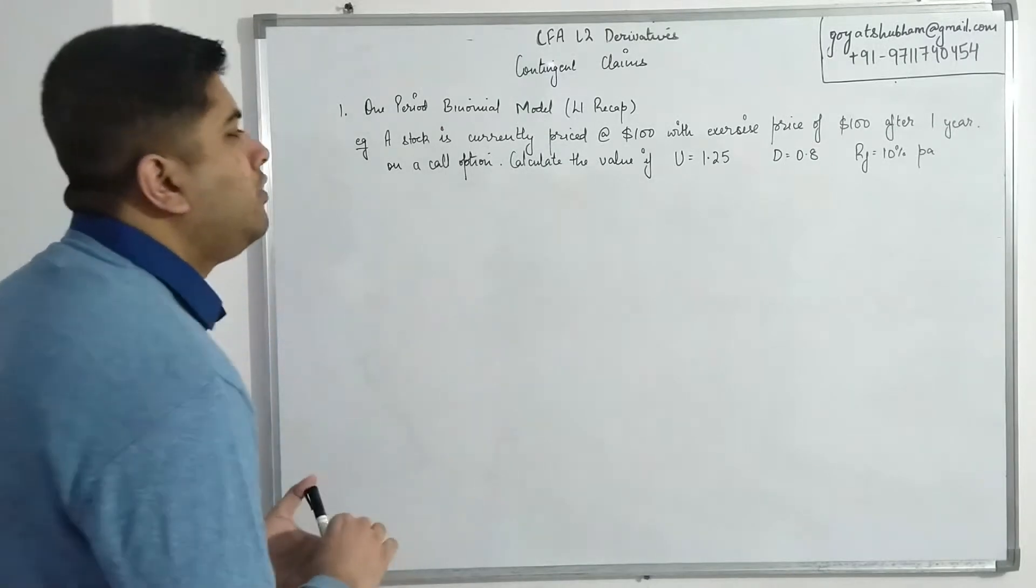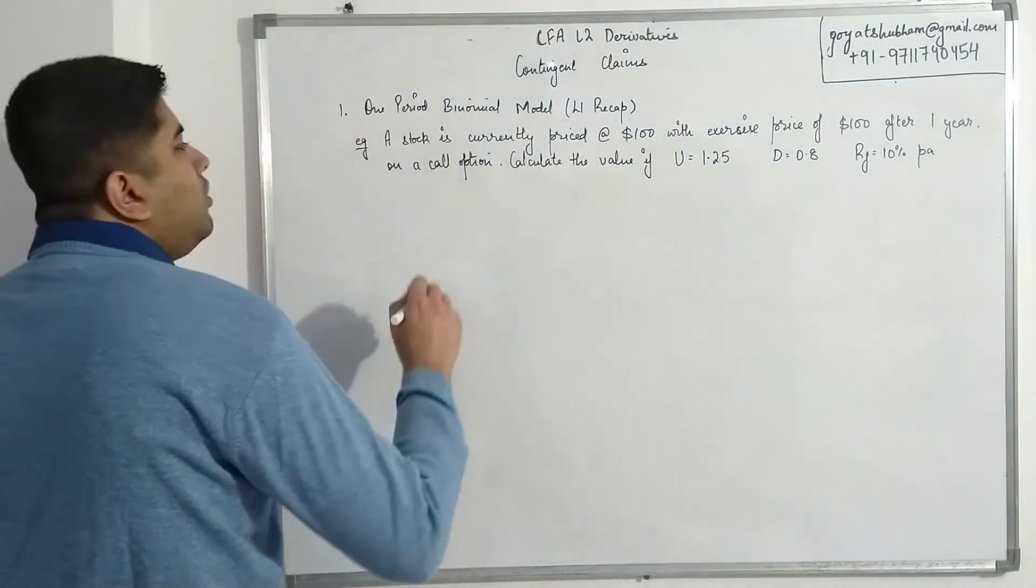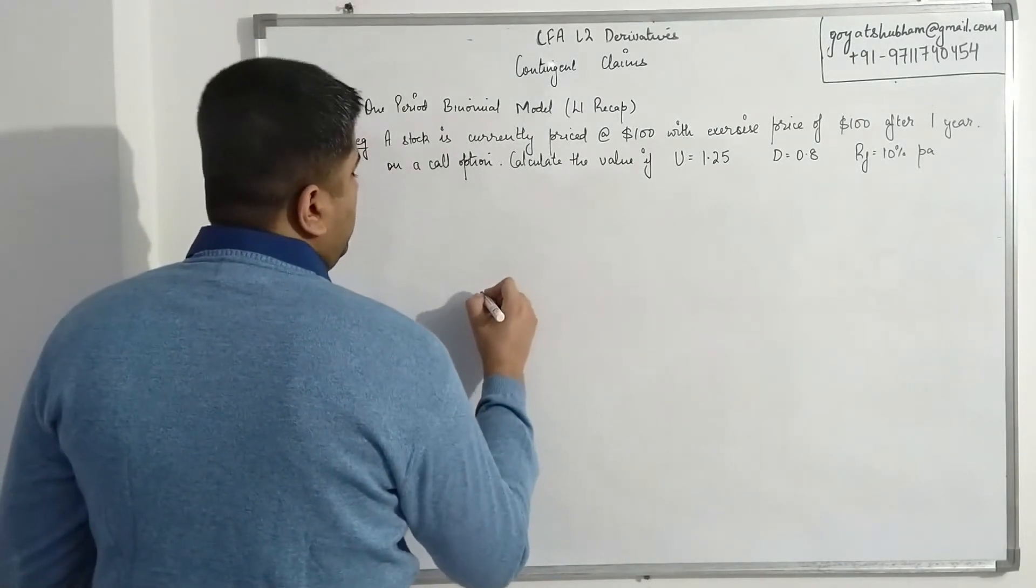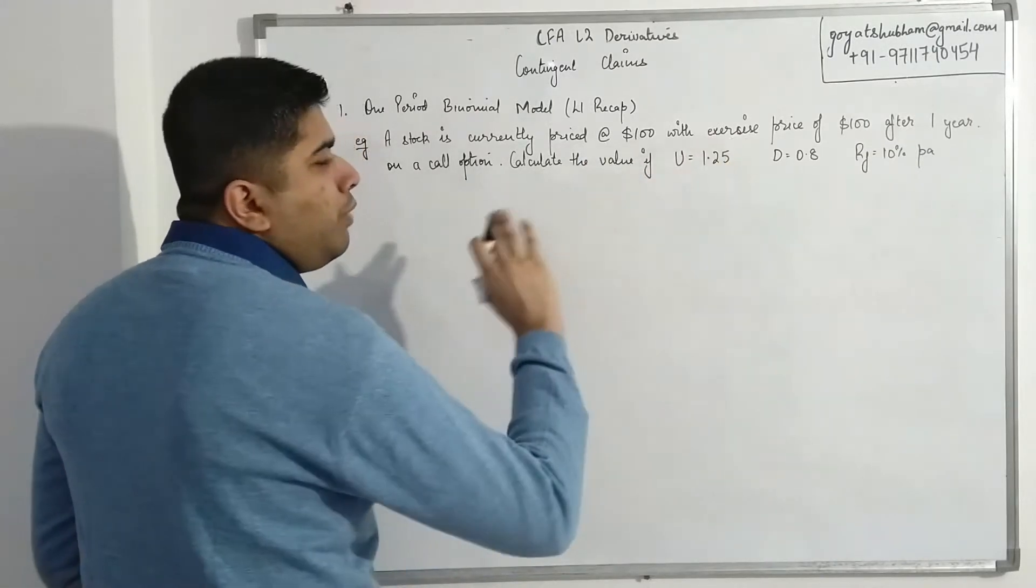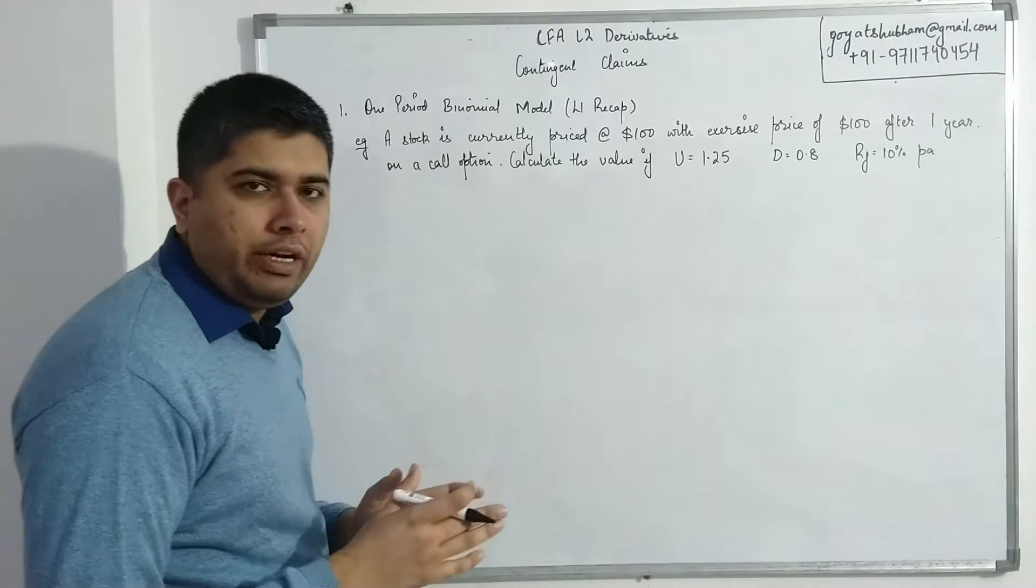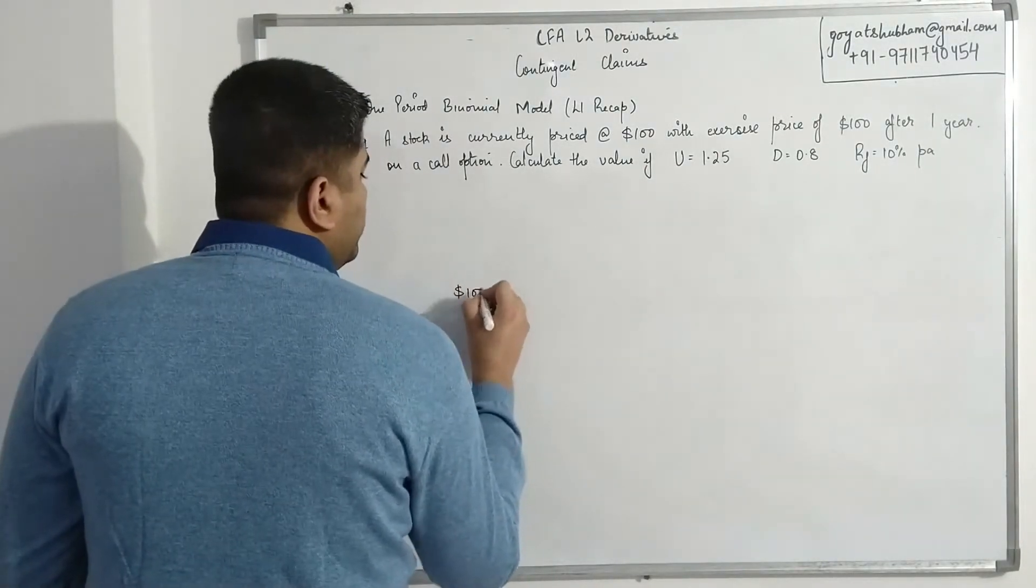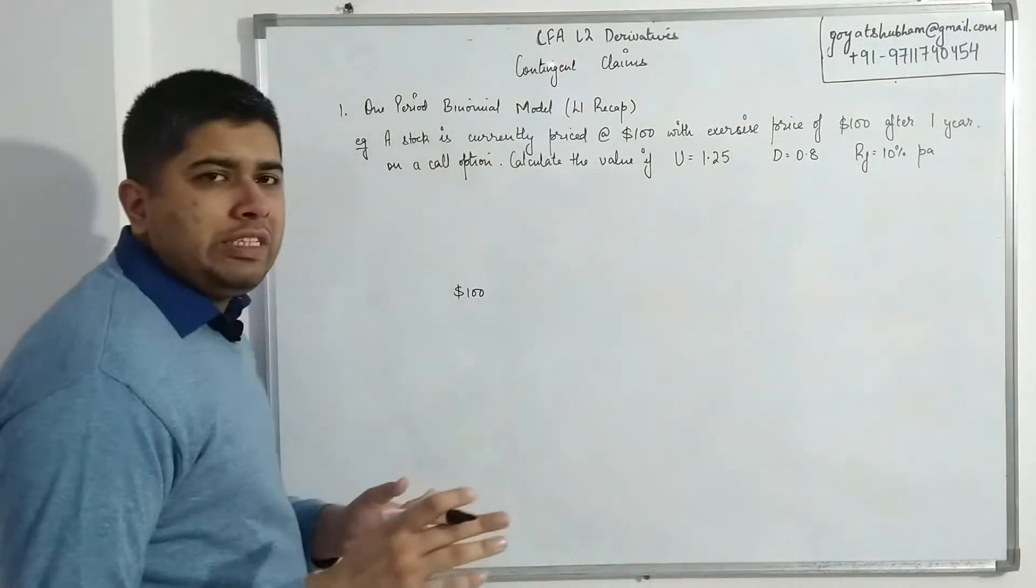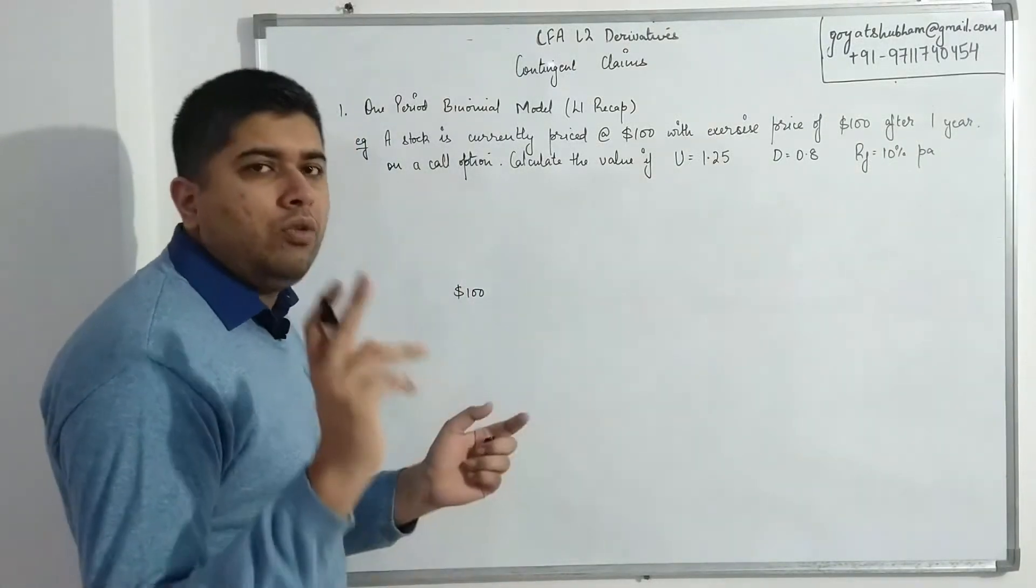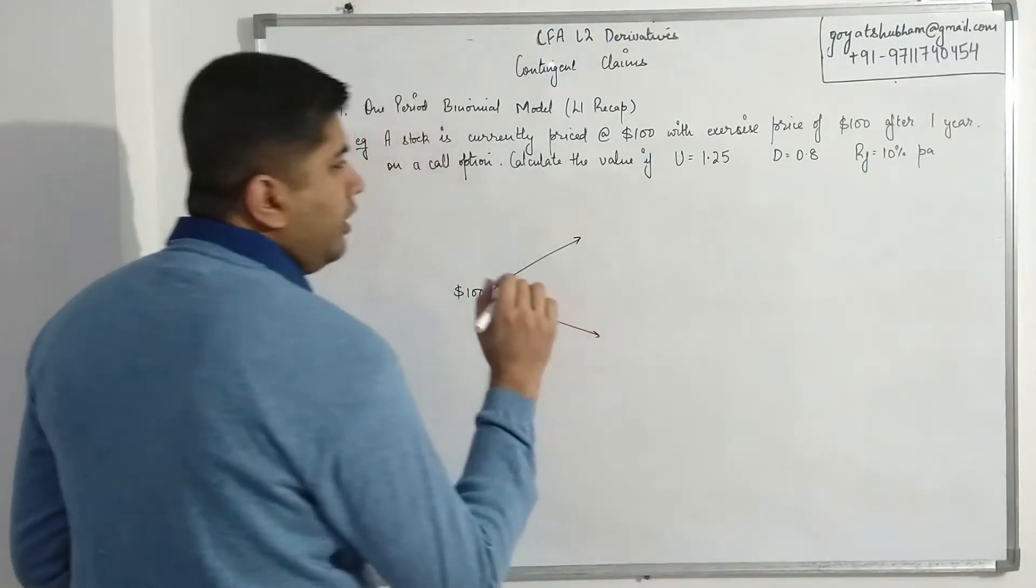The binomial method is based on a simple assumption that whatever the stock price is right now, the underlying price is 100. First focus of binomial model is always constructing a binomial tree on the basis of the underlying. The binomial model says that this price can either go up or go down. There are only two possible outcomes, so I have an up move and a down move.